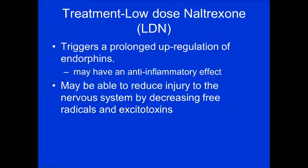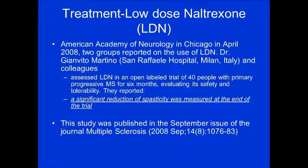Low-dose naltrexone triggers prolonged upregulation of endorphins, which may have an anti-inflammatory effect and may reduce injury to the nervous system by decreasing free radicals and excitotoxins. The American Academy of Neurology in 2008 showed a significant reduction in spasticity at the end of trial with this treatment, published in the September 2008 issue of the Journal of Multiple Sclerosis.